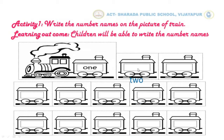In the next box, the next number is 3 — T, H, R, E, E — 3. The next number is F, O, U, R — 4.